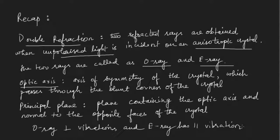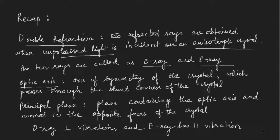From the phenomenon of double refraction we get two rays — one perpendicularly polarized and the other parallelly polarized. To completely polarize the beam, we need only one ray. We will now see how, using a calcite crystal, we can make a device to produce completely polarized light. Such a device is known as the Nicol prism.